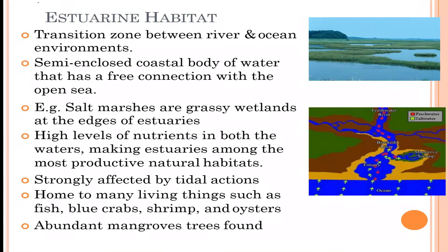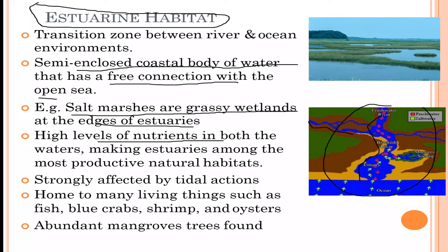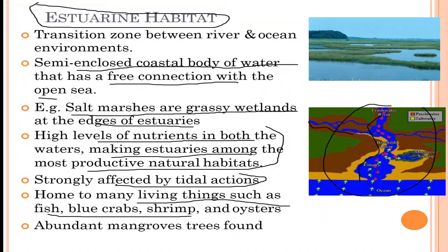Now let's talk about the estuarine habitat. It is basically a transition between a river and an ocean — a semi-enclosed coastal body of water that has a free connection with the open sea. Small streams connect with rivers which then flow to the sea. Examples include salt marshes, which are grassy wetlands at the edges of estuaries with high levels of nutrients, making estuaries among the most productive natural habitats.